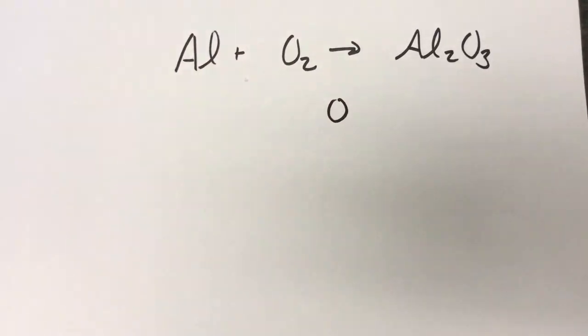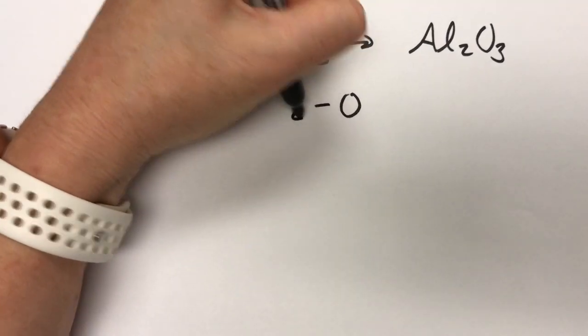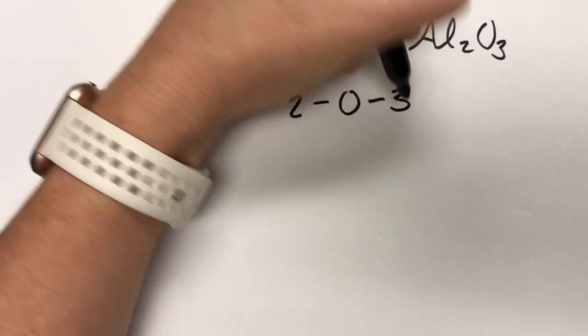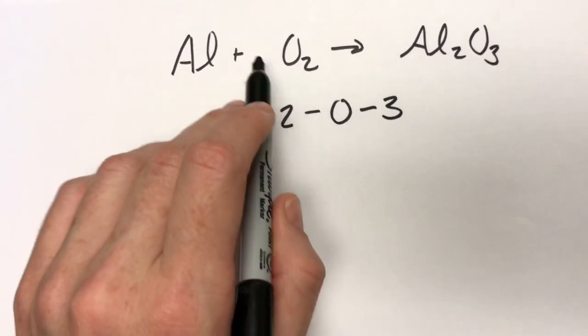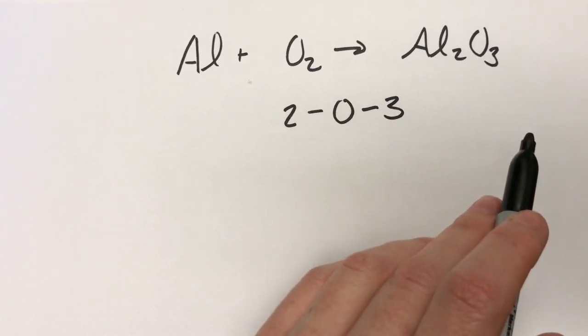Start with the most difficult thing and get it out of the way. On our left hand side we have two. On our right hand side we have three. There are two ways we can go about it. We could say three divided by two would give us 1.5 and then balance the aluminum. We'll have to multiply everything by two.